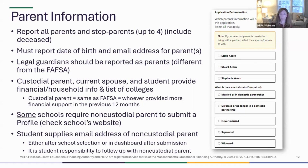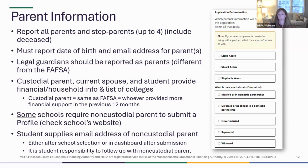Some schools — not all — but some schools that require the profile also require a non-custodial profile to be filled out. In that example, that would be dad. Dad might have to fill out his own profile. You can check the school's financial aid webpage to find out if that is required. If the student has divorced or separated parents, they'll list the non-custodial parent's email address, and the profile will send an invitation to that parent asking them to fill out their own profile. On the right-hand side, you can see a listing of how the profile indicates which parents are listed and which ones — the custodial parent and their current spouse — are going to fill out this profile.